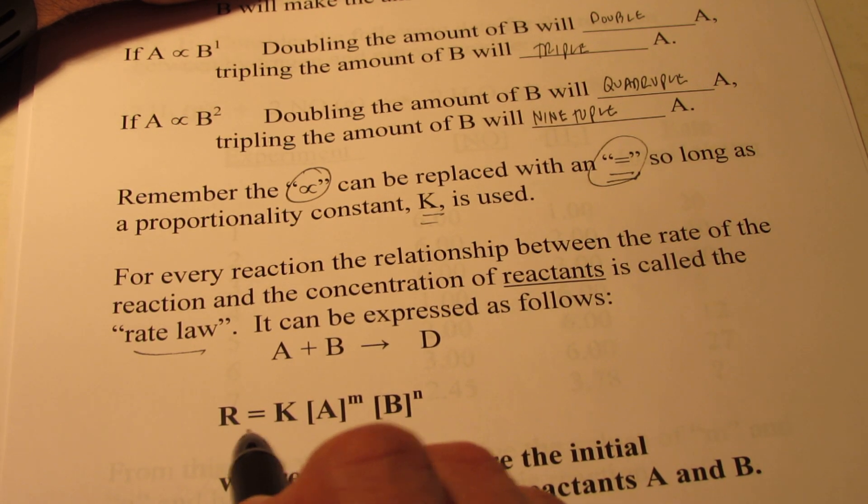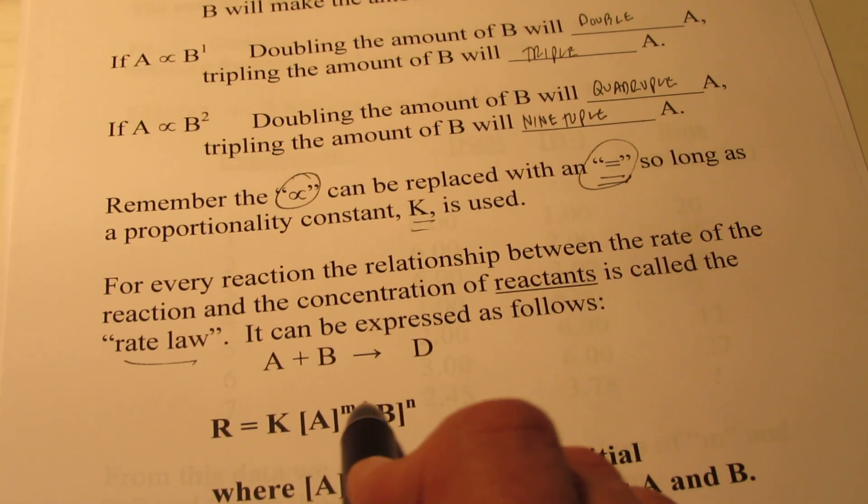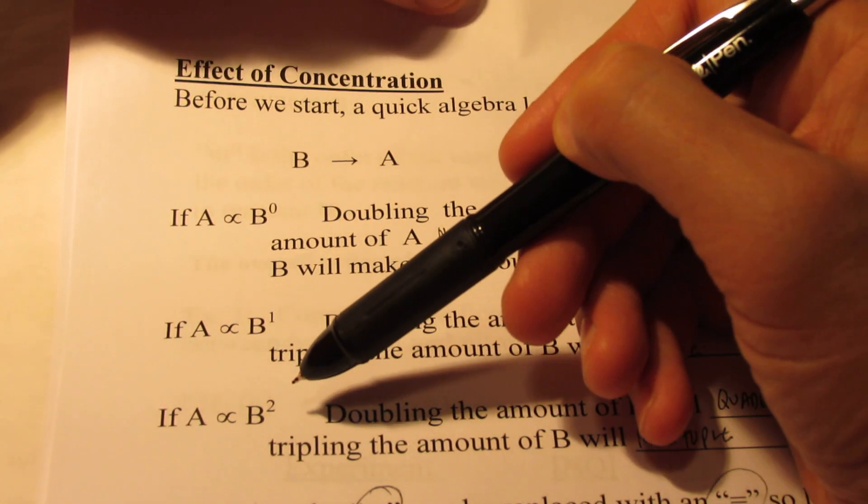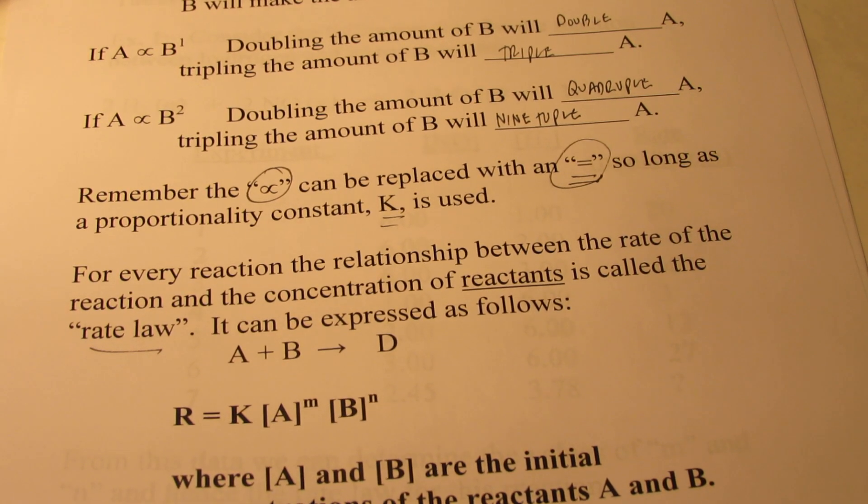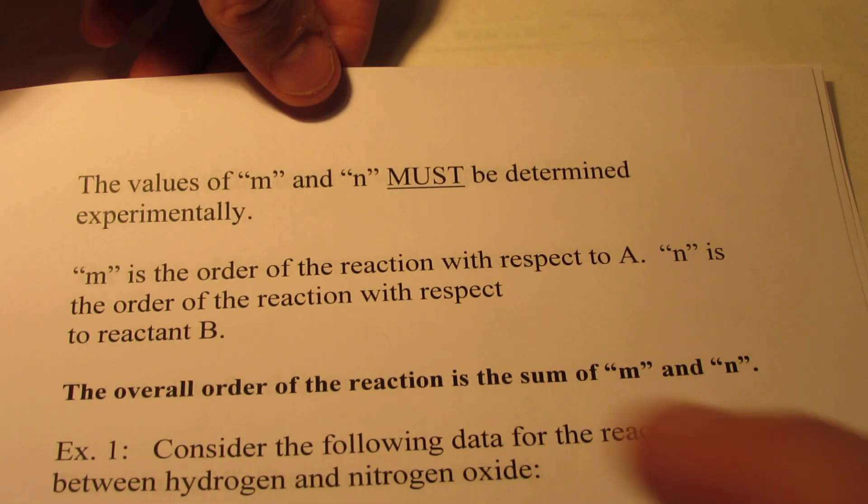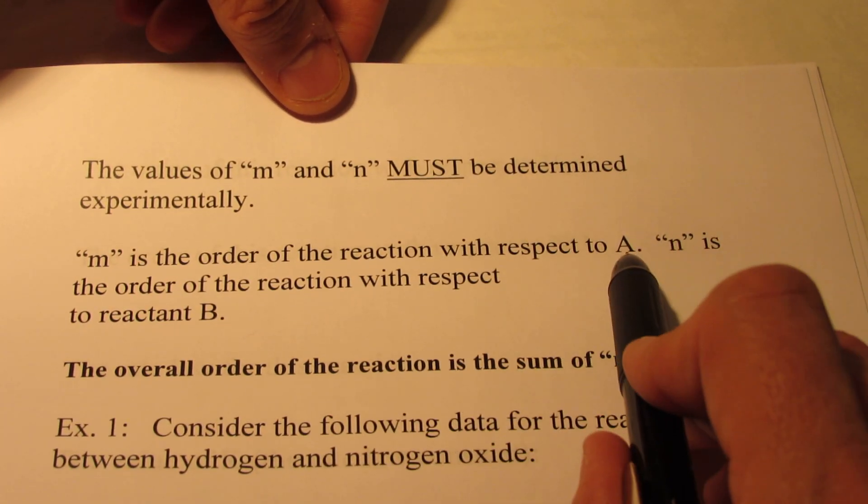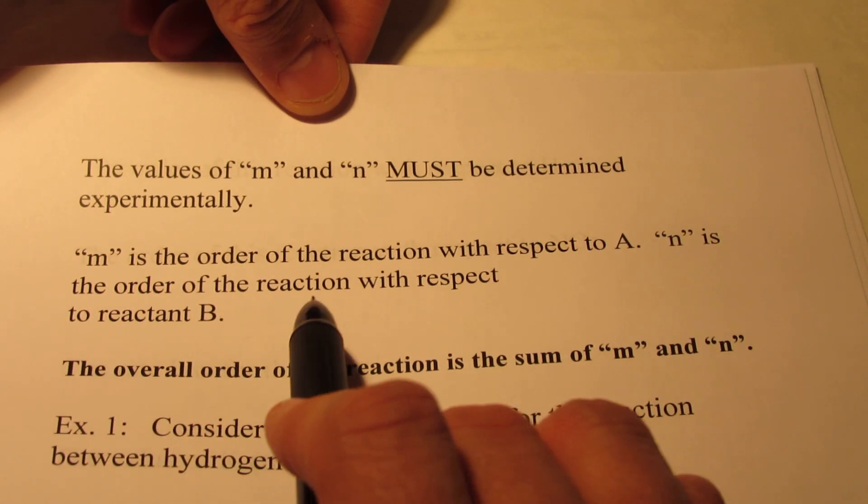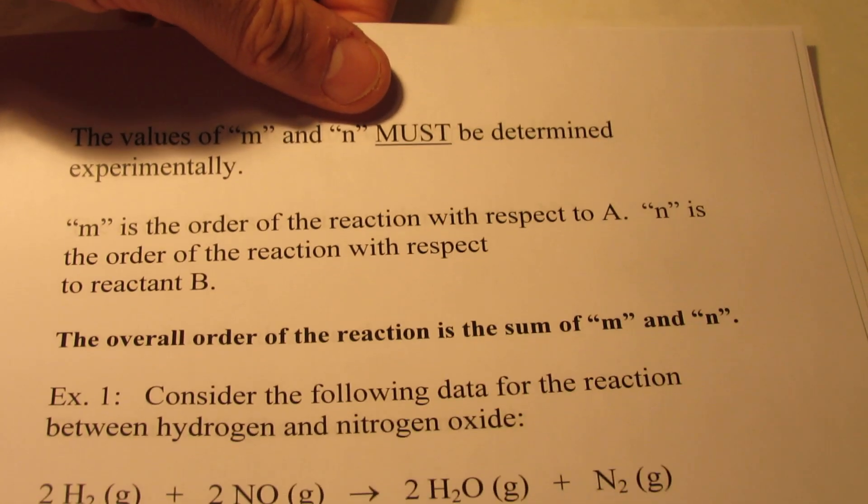The rate is related to the concentration of my reactants to some power, M and N. By the way, those powers will be either 0, 1, or 2. That's why we had that math lesson just a moment ago. A and B are the initial concentration of my reactants, A and B. M and N, the exponents, must be determined experimentally. M is the order of the reaction with respect to A, and N will be the order of the reaction with respect to B.